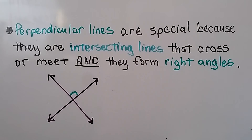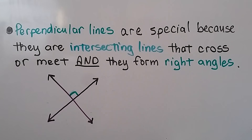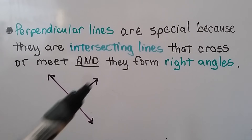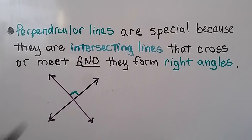Perpendicular lines are special because they are intersecting lines that cross or meet and they form right angles. So they do both — they have intersecting lines and make right angles. So they're special.